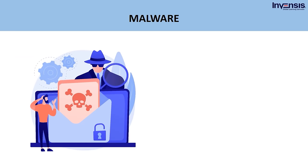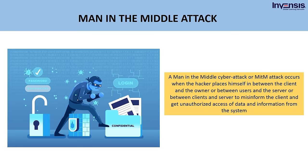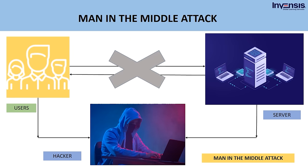The next type is malware. In a malware cyber attack, hackers create a malware code to hack electronic or digital devices like mobiles, computers, and laptops to obtain unauthorized access. A man-in-the-middle (MITM) attack occurs when the hacker places himself between the client and the server to misinform the client and gain unauthorized access to data. The hacker has access to all data transferred between user and server, giving him complete control over the digital system — while both the user and server remain unaware, and for any outsider it appears to be a normal client-server communication.